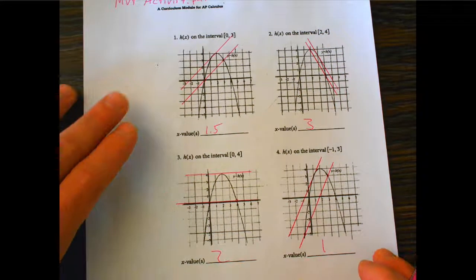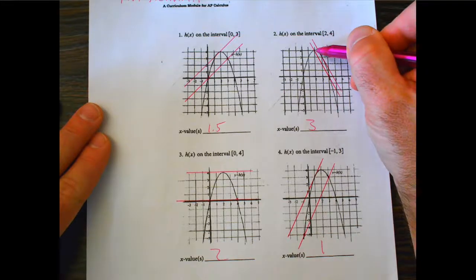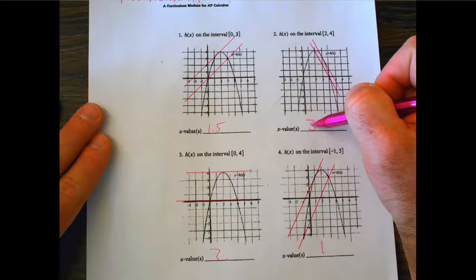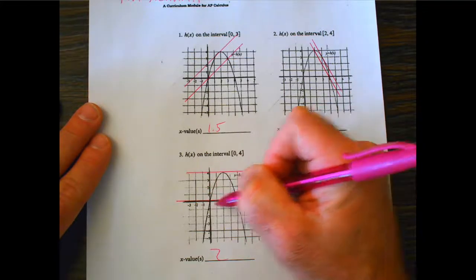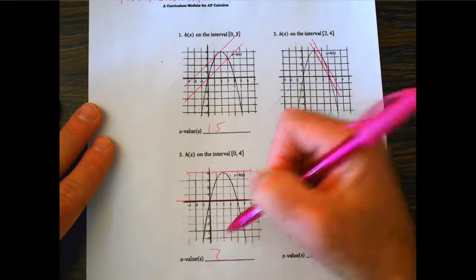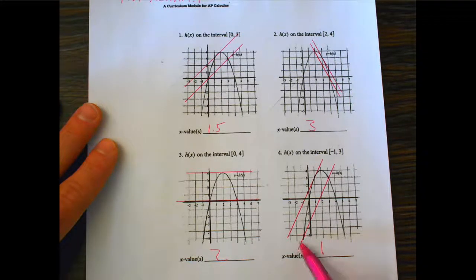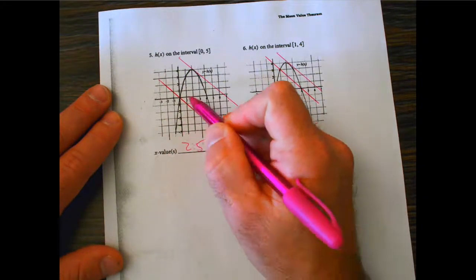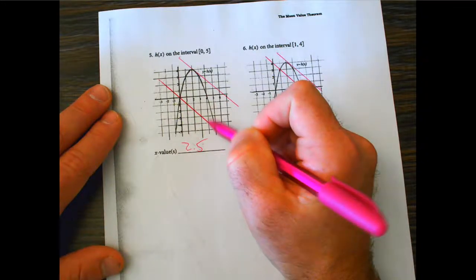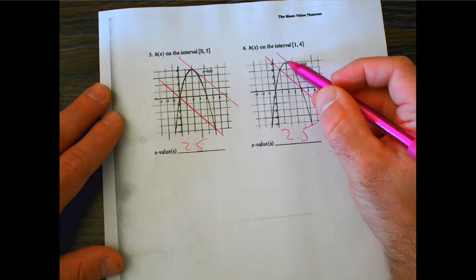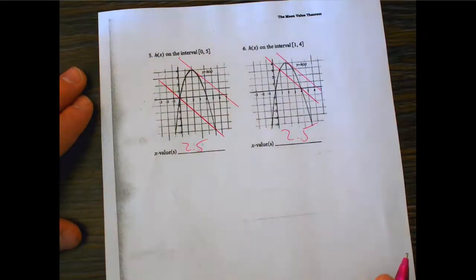Hopefully we're in the ballpark. You're drawing secant lines and trying to draw a tangent parallel to the secant. Problem two occurs at about three. On number three we have a horizontal secant, so the tangent occurs at the maximum value of about two. Number four's parallel tangent is at about one. For number five between zero and five, negative slope, the tangent is at about 2.5. Same on number six, also at about 2.5.